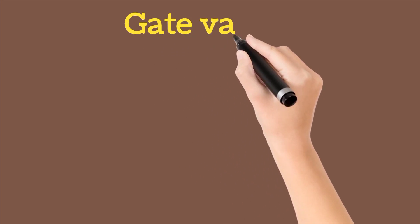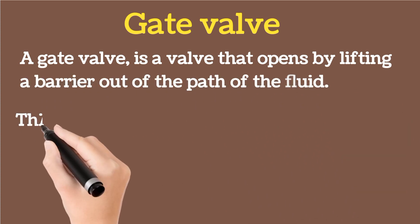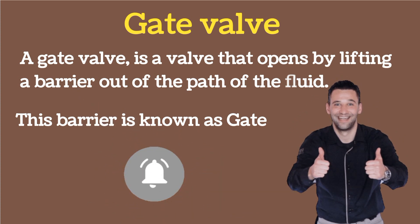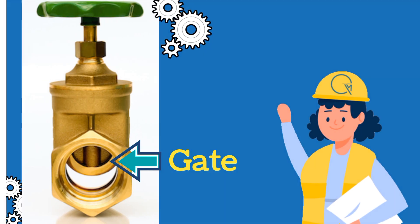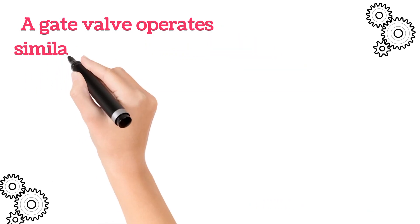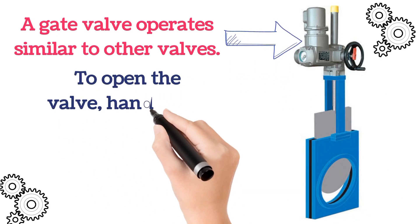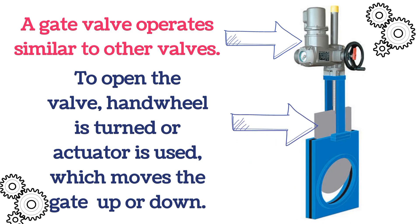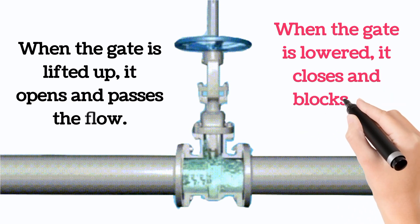Now the next valve is the gate valve. A gate valve opens by lifting a barrier in the path of fluid — this barrier is known as the gate. In the image, the barrier is shown by the arrows. The operation of gate valve is similar to the other valves. To open the valve, a hand wheel or a pneumatic actuator is used. The hand wheel or actuator moves the gate either up or down. When the gate is lifted up, the valve opens and passes the flow. When the gate is lowered, the valve closes and blocks the flow.